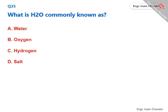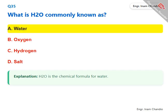What is H2O commonly known as? H2O is the chemical formula for water. The correct answer is A. Water.